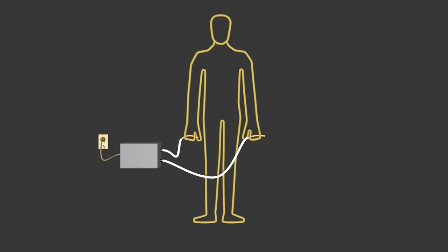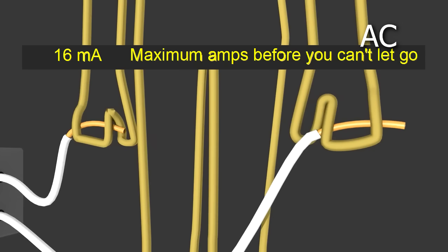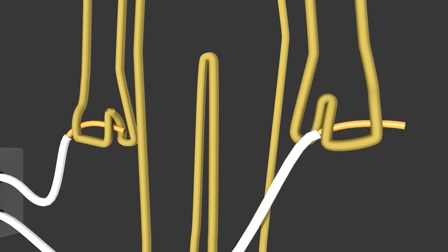According to the documents, at 1 milliamp, or .001 amps AC, the feeling is barely noticeable. But above 16 milliamps AC, or 88 milliamps DC, your muscles are stimulated to extend and flex. But when the flexing dominates, you can no longer let go.